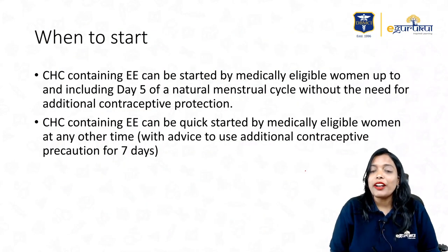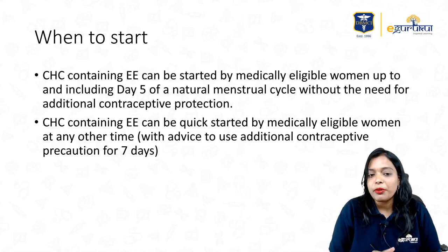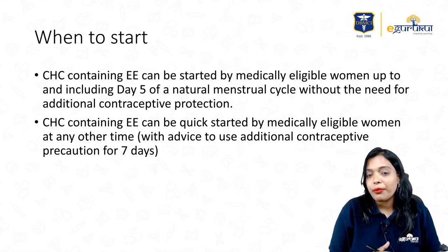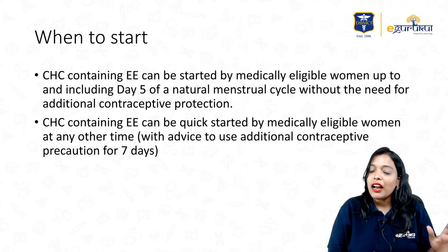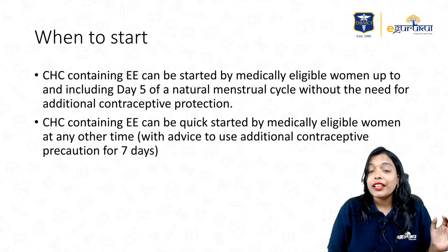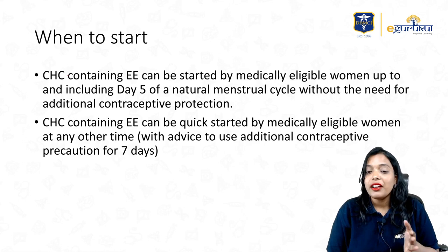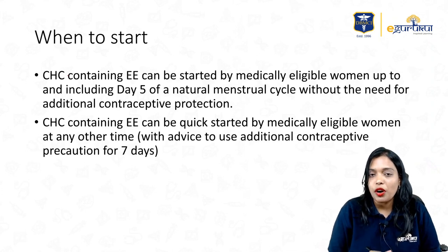When should you start the pill? Combined hormonal contraception containing ethinyl estradiol should be started in all medically eligible women from day 1 to day 5 of the menstrual cycle. So you can start within day 5 of a menstrual cycle, so that there won't be any recruitment of the antral follicles and no selection of the dominant follicle. There is no point if you start beyond day 5 — if you start beyond day 5, you have to use additional contraception for the next 7 days, because the dominant follicle may have already been selected.